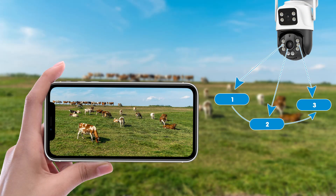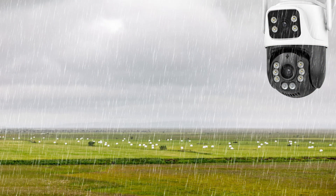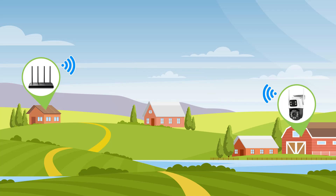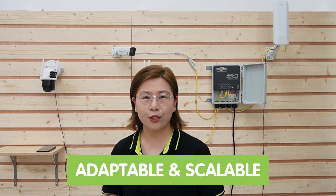And thanks to its pan, tilt, and zoom capabilities, you can control where and what it sees, all from the palm of your hand. The camera can also provide clear images even in low light conditions or at night, and it's designed to withstand harsh farm environments — from rain and dust to extreme temperatures. Setting up a Wi-Fi PTZ dual lens camera is as straightforward as installing a new app on your phone. Because it connects over Wi-Fi, there's no need for complex wiring or specialized infrastructure, making it an adaptable and scalable solution for farms of all sizes.